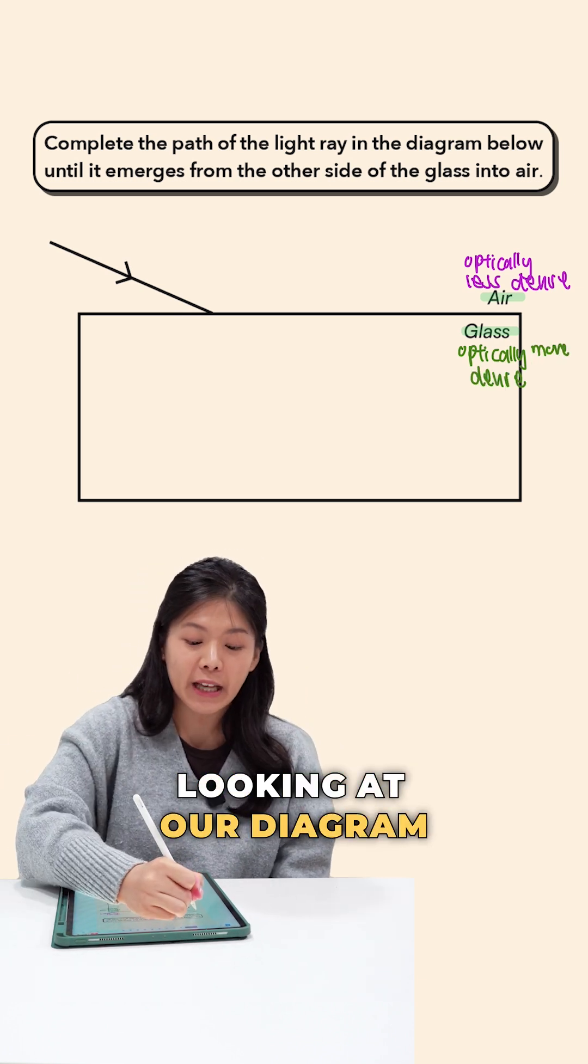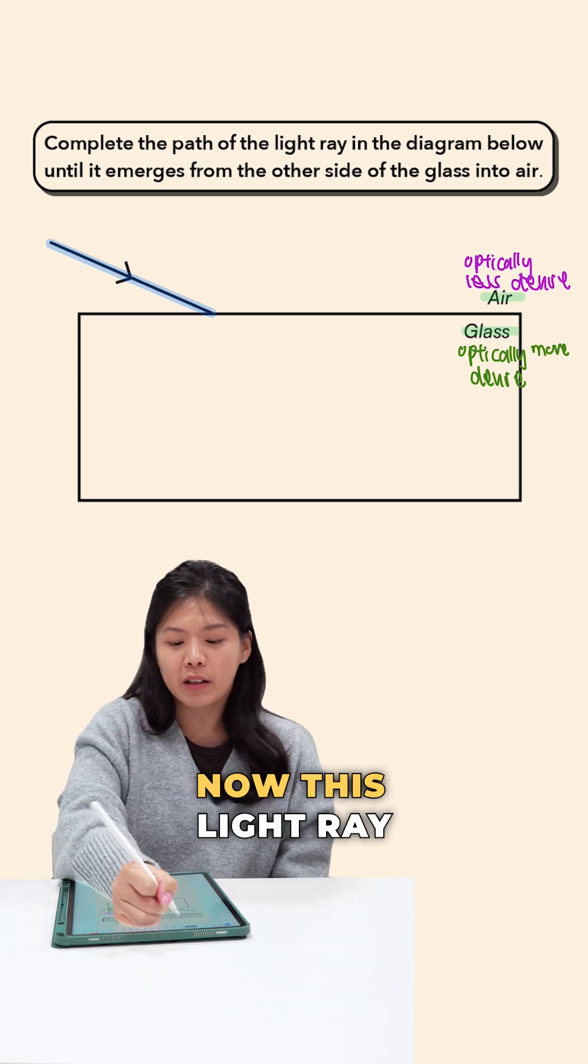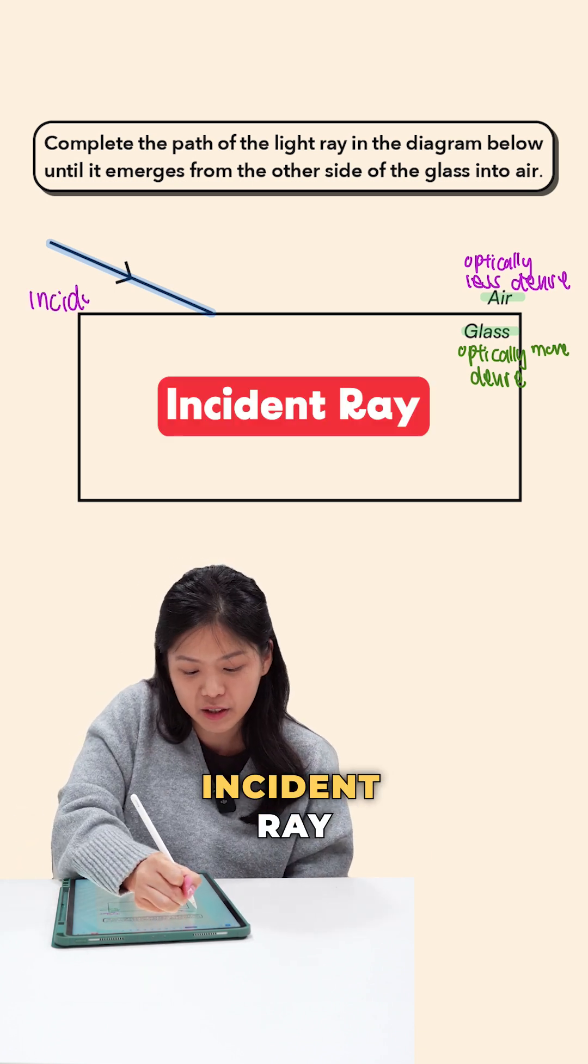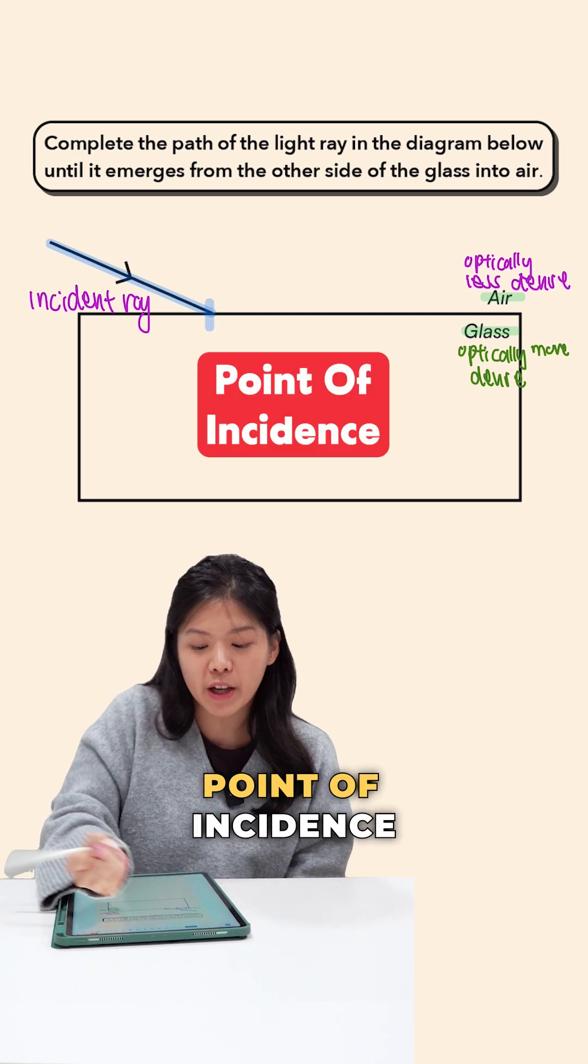Now before we draw anything, looking at our diagram over here, we see that there is a light ray striking the glass air boundary. This light ray, we call it the incident ray. This incident ray strikes the boundary at a point called the point of incidence.